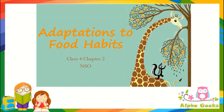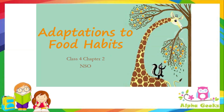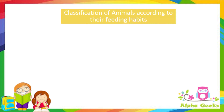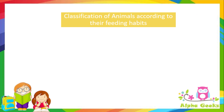Hello kids, welcome to Alpha Geeks. Adaptations to food habits. All animals have to eat their food in order to get energy to live and survive. Different animals eat different types of food. An animal's mouth, teeth and even body structure all help it to eat a certain type of food. You can often figure out what types of food an animal eats by looking at its body and mouth. So based on the feeding habits, animals are classified according to the following types.